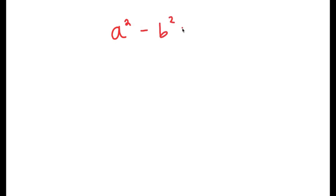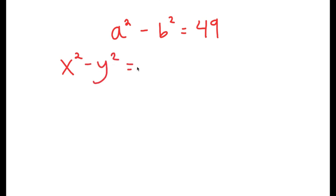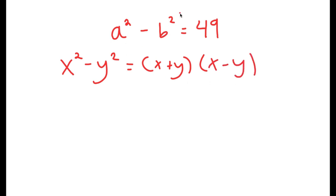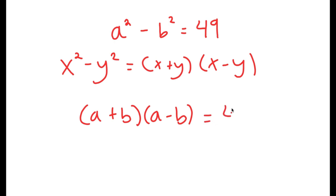In this video, I'm going to solve the equation a squared minus b squared is equal to 49. To solve this, I'm going to use the property that states that if I have something in the form x squared minus y squared, this is equal to x plus y times x minus y. In this case, a squared minus b squared — a is x and b is y — so this turns into a plus b times a minus b is equal to 49.